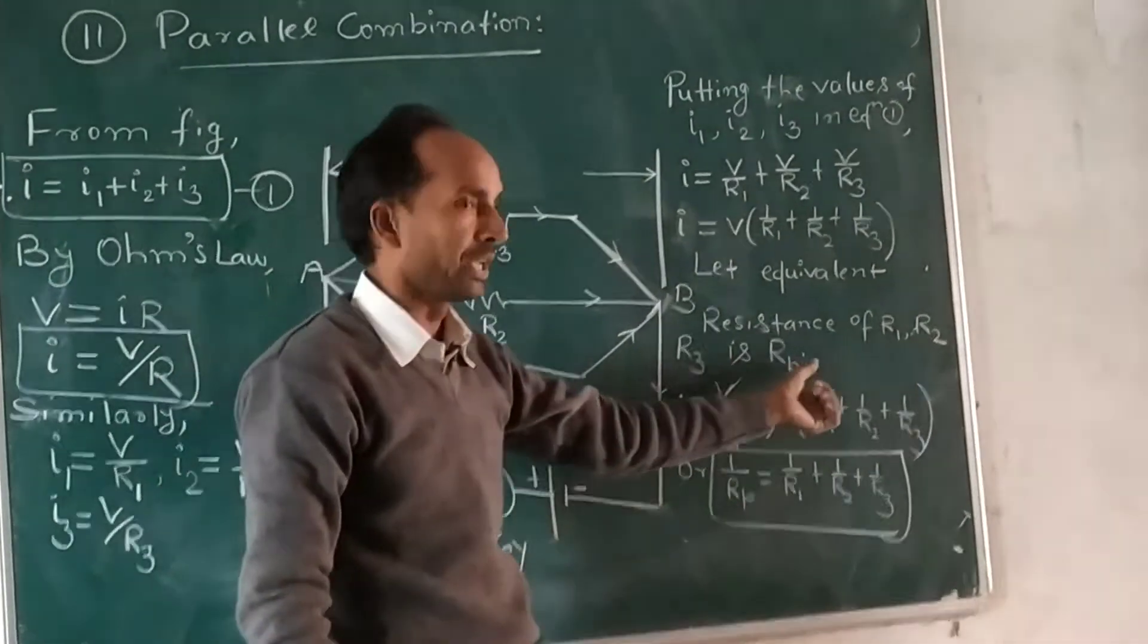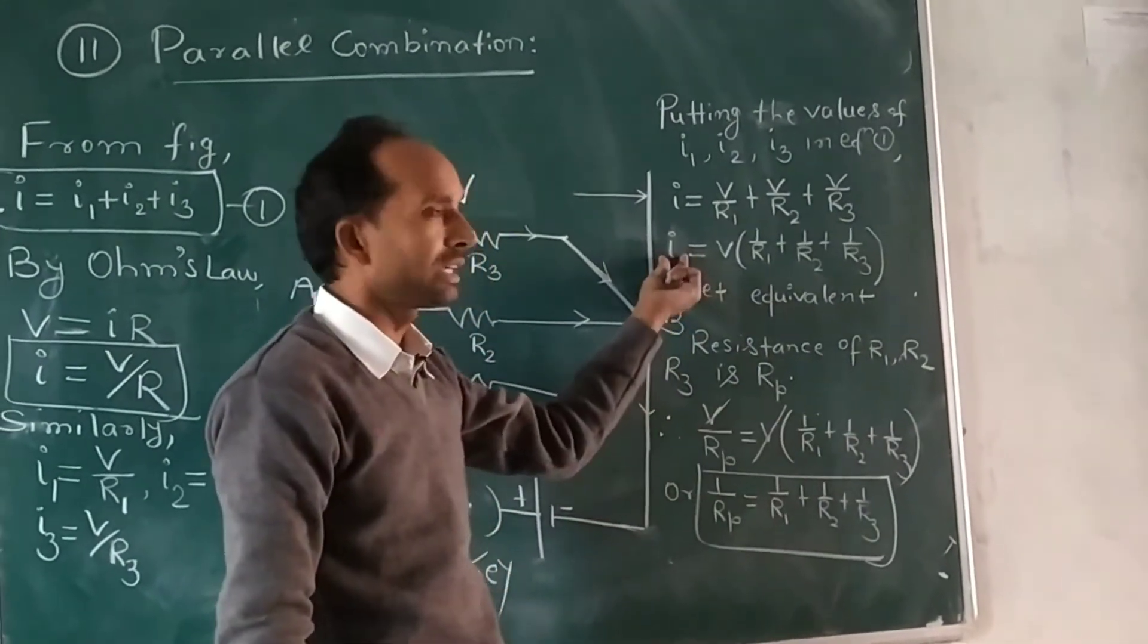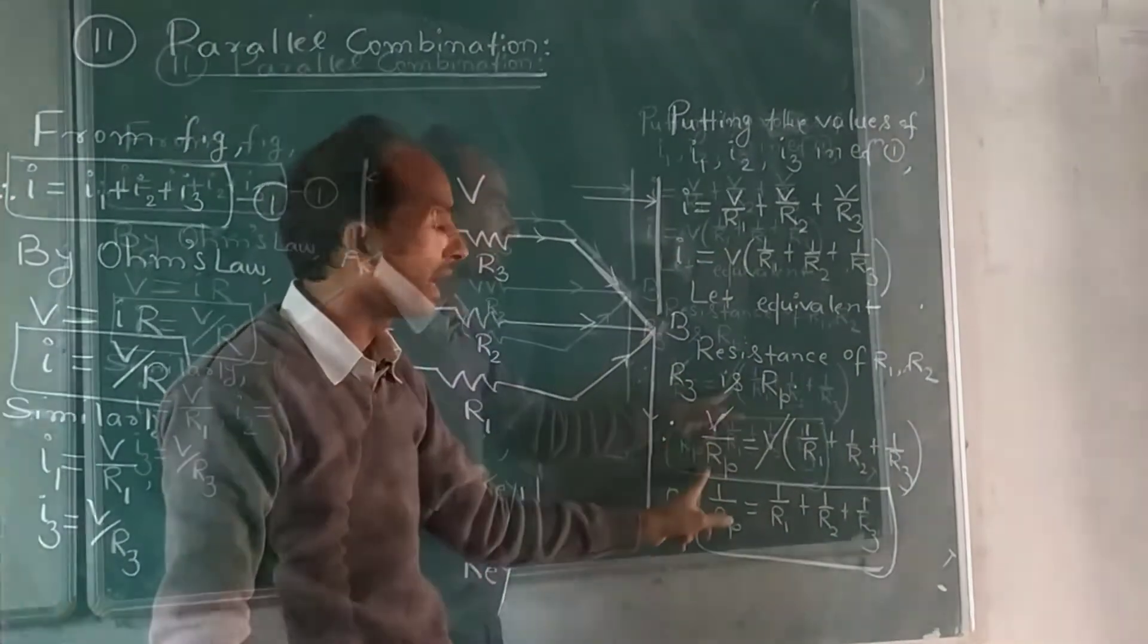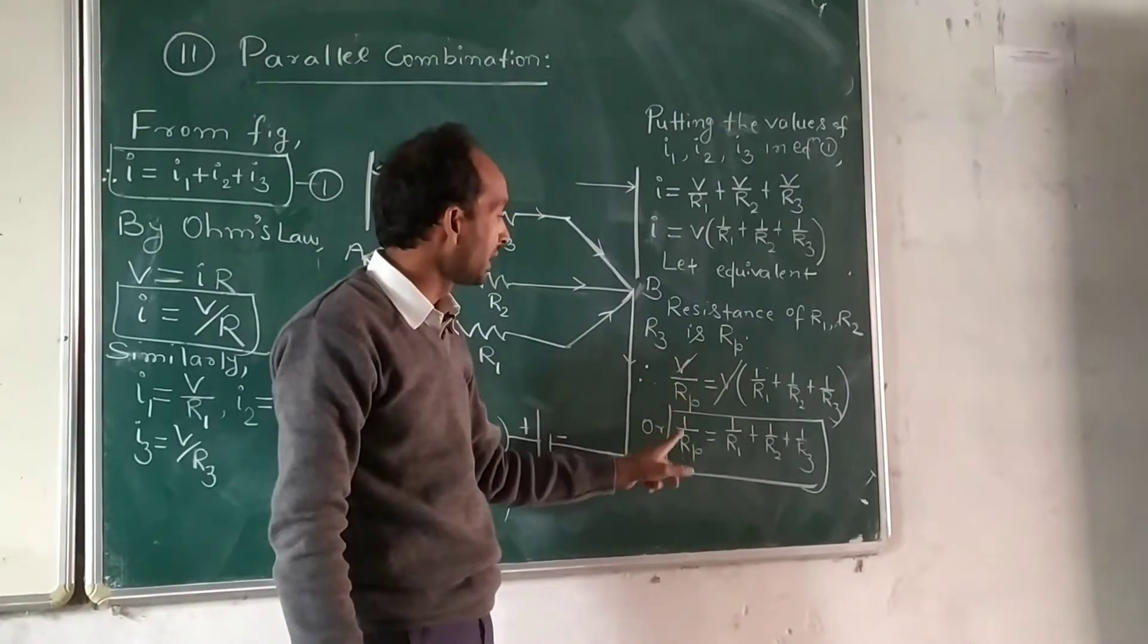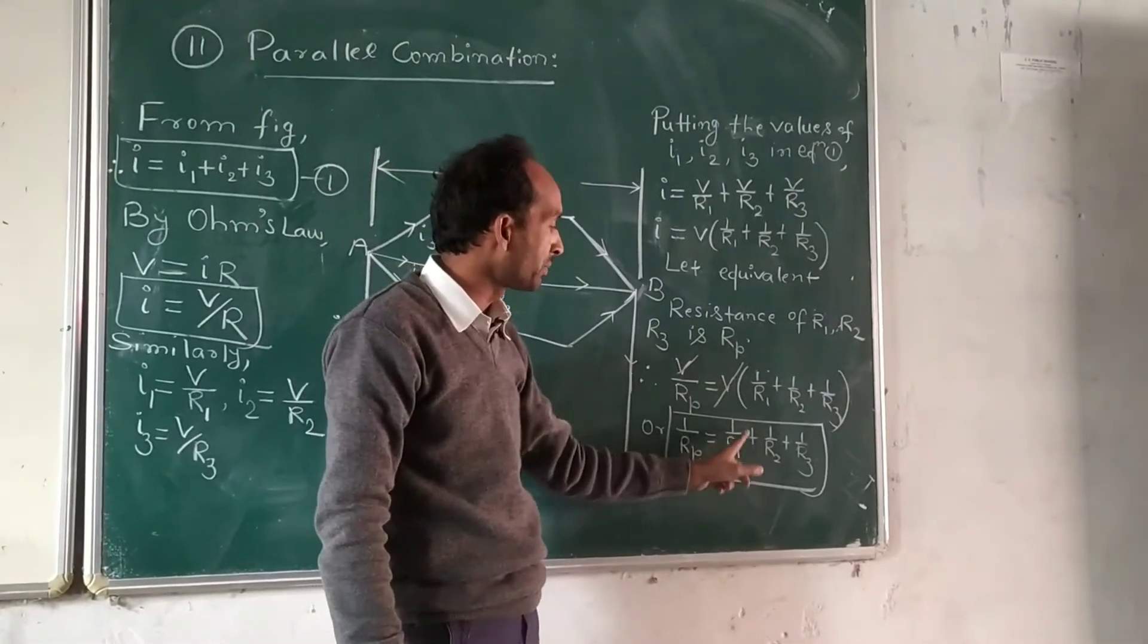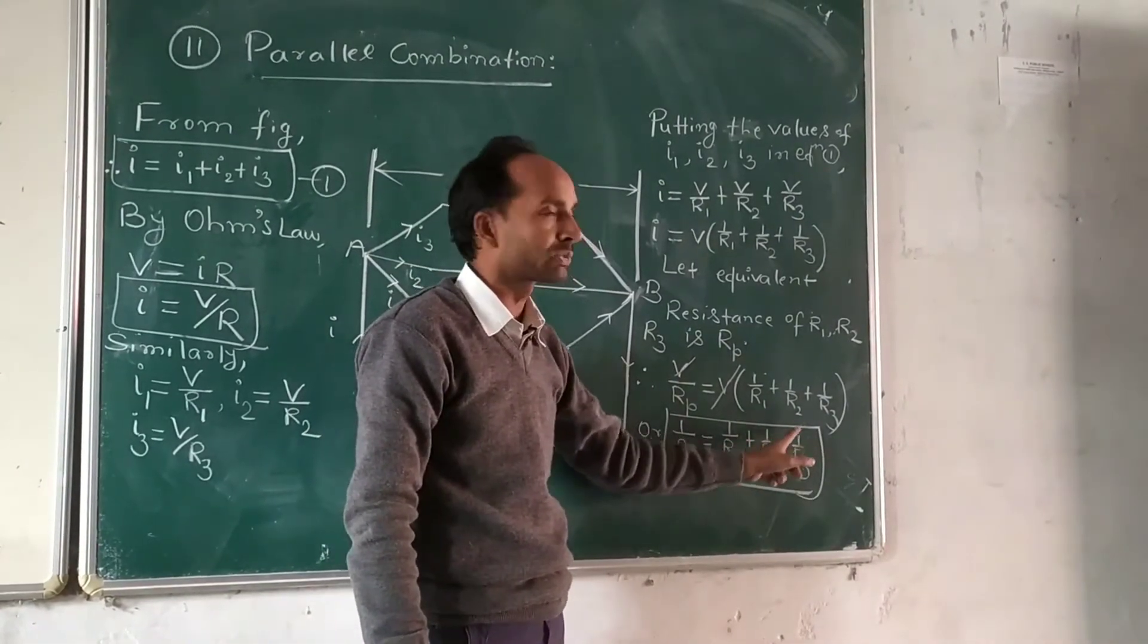So we can write I equals V by Rp, and on the right hand side, we get 1 by Rp equals 1 by R1 plus 1 by R2 plus 1 by R3.